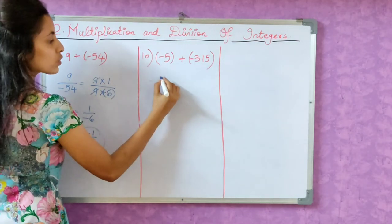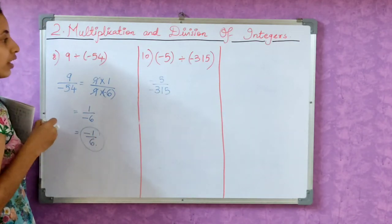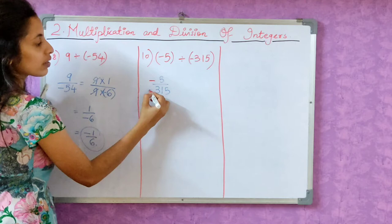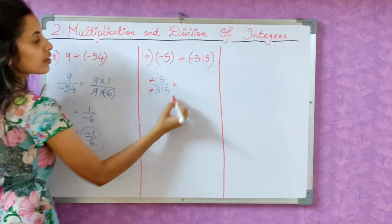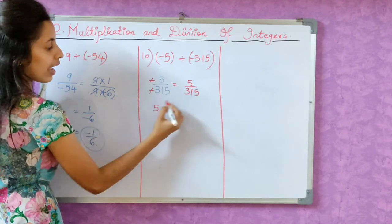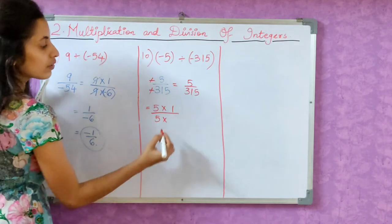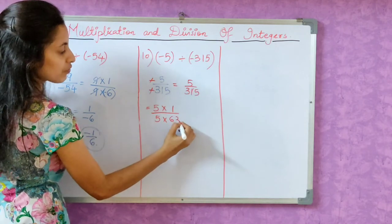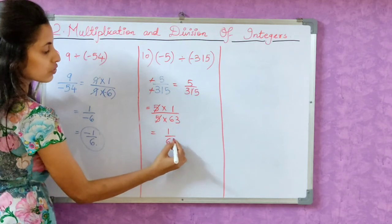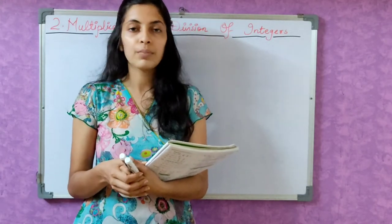Now let's see the 10th one. Minus 5 by minus 315. Now look here. Here we have two minus signs. When we have minus minus, they cancel. So what remains? Just 5 by 315. We can also cancel this. We can write it as 5 times 1 divided by 5 times, 5 sixes are 30, one remains, 5 threes are 15. So this and this gets cancelled. Our answer is 1 by 63. The four sums that we didn't do, please work on them.